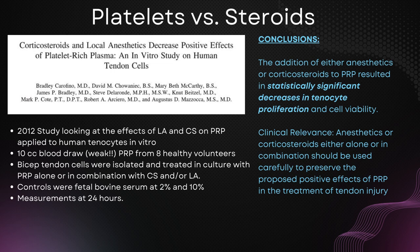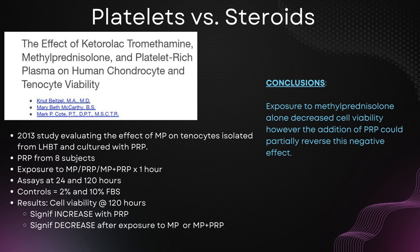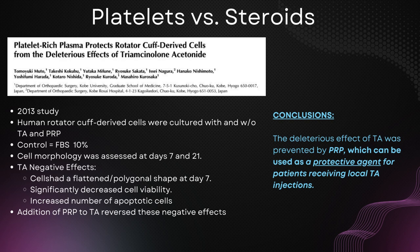Steroids — let's not be so fast to say they're simply bad. This follows with what we all know: local anesthetics and steroids are bad for MSK tissue, and adding them to PRP may negatively impact outcomes. The following year, Beitzel published a study with PRP from eight subjects and tendon cells from the long head of the biceps, with exposure to either methylprednisolone alone or methylprednisolone in combination with PRP. Both of these groups fared poorly compared to PRP and even Ketorolac. However, the combination of methylprednisolone and PRP was less bad than methylprednisolone alone in terms of cell viability.